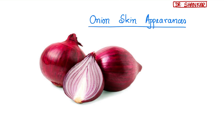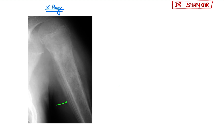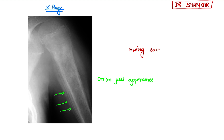Let's discuss our first image. This is an X-ray image showing onion skin peel appearance. You can see there is layering like onion peel. This onion peel appearance is seen characteristically in one type of bone tumor — that is Ewing's sarcoma. In case of Ewing's sarcoma, this onion skin appearance is seen.